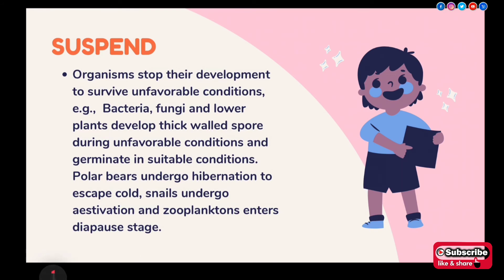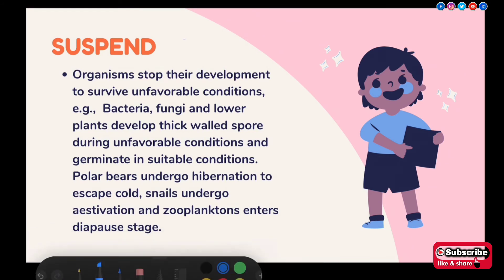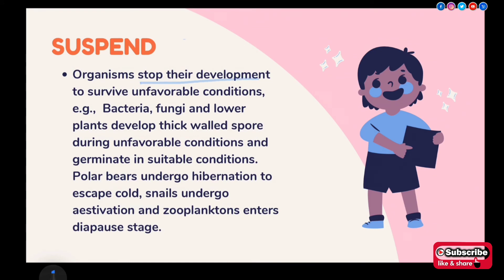Next is 'Suspend'. Organisms stop their development to survive unfavorable conditions. Bacteria, fungi, or lower plants form thick-walled spores outside their body so they can survive unfavorable conditions. When the unfavorable conditions pass, they can then germinate and increase their population. Until the favorable environment returns, they halt their own growth.